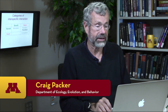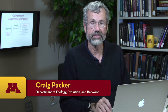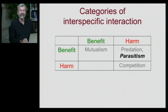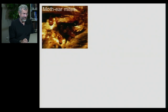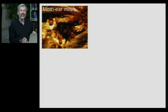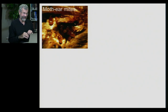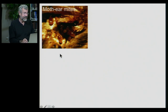Our final category of interspecific interaction is parasitism — the most devious and evil thing we can think about here. For example, did you know that moths flying around, minding their own business, have little mites inside their ears that are sucking their moth blood?